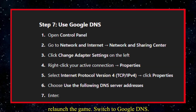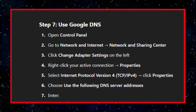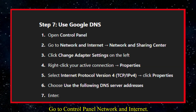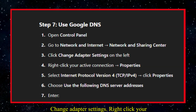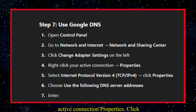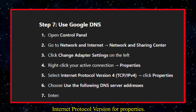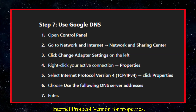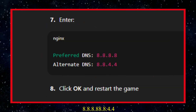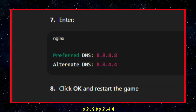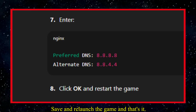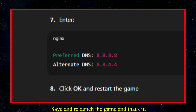Switch to Google DNS. Go to Control Panel, then Network and Internet, then Change Adapter Settings. Right-click your active connection, go to Properties, click Internet Protocol Version 4, then Properties. Use the following DNS: 8.8.8.8 and 8.8.4.4. Save and relaunch the game.